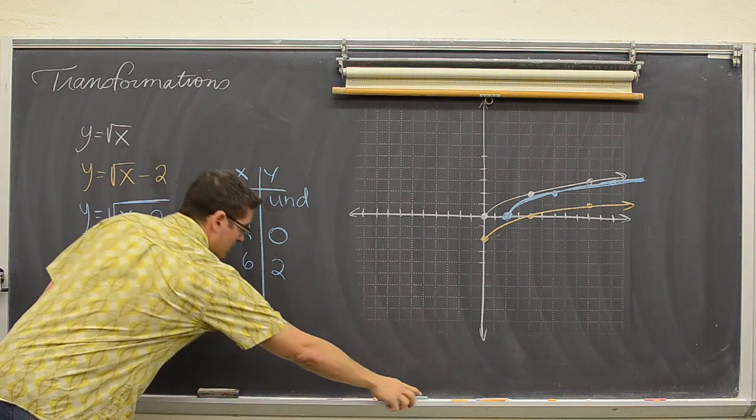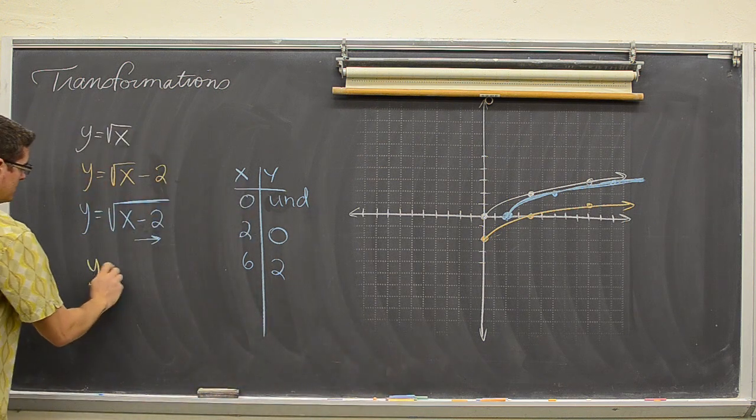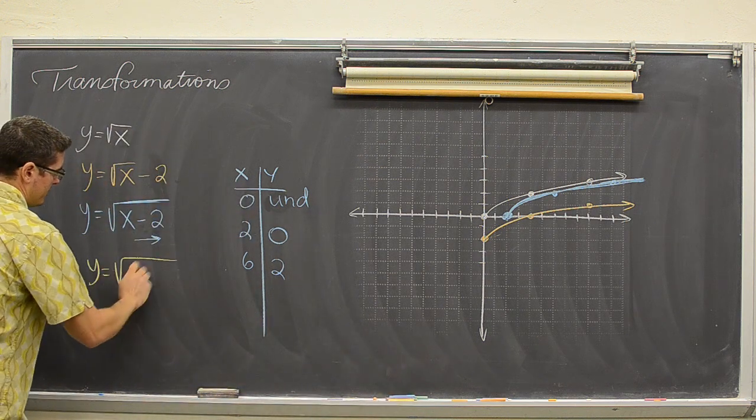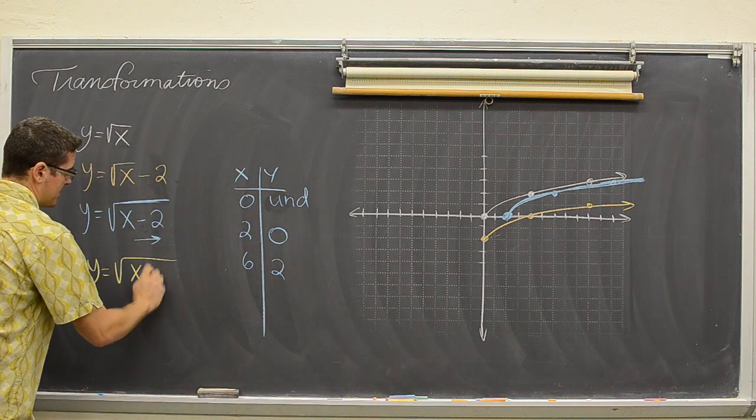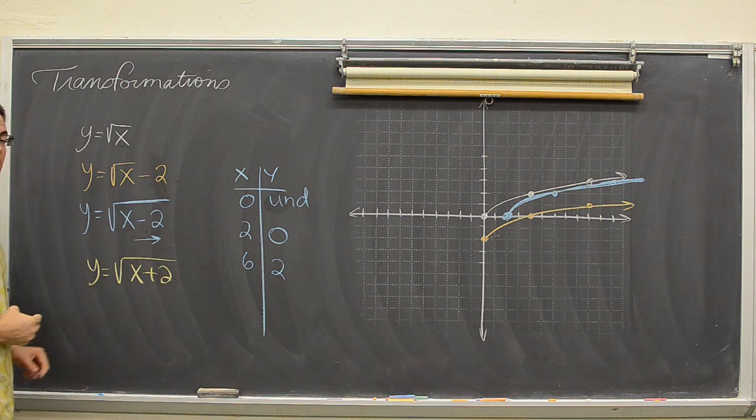If it were y equals the square root of x plus two, that would be a shift to the left.